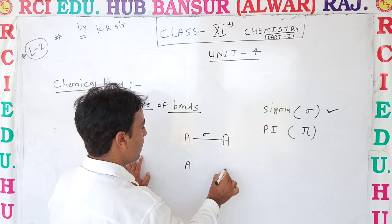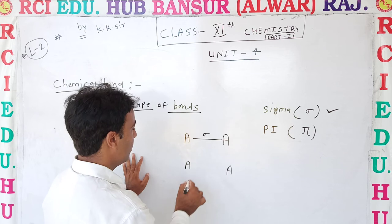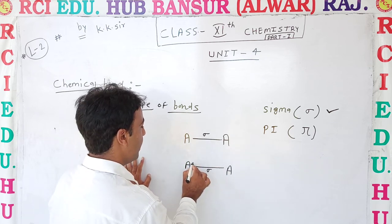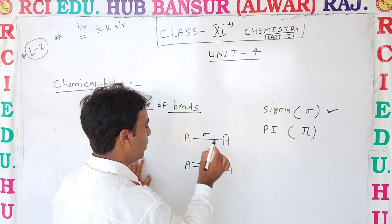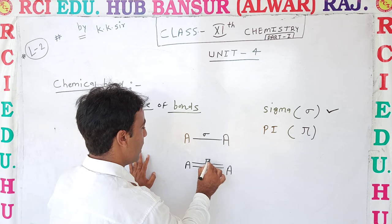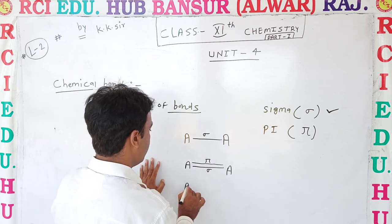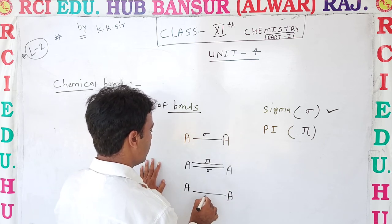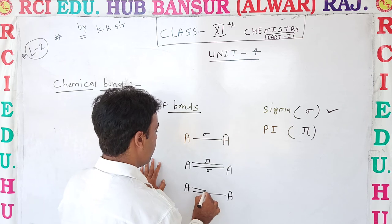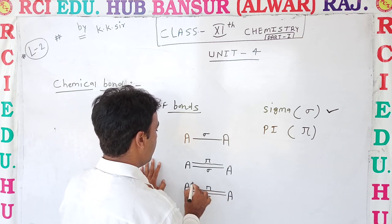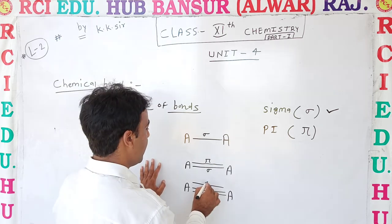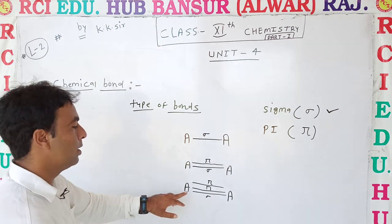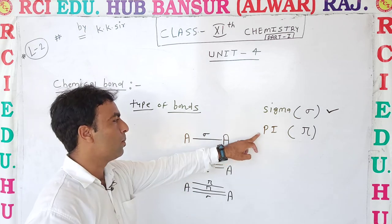If we draw two lines between atom A and atom A, the second line is called a pi bond. If there are three lines, the first is sigma, the second is pi, and the third line is also a pi bond. So sigma bond is the first bond formed, and every bond formed after that is called a pi bond. First is sigma bond, second is pi bond.